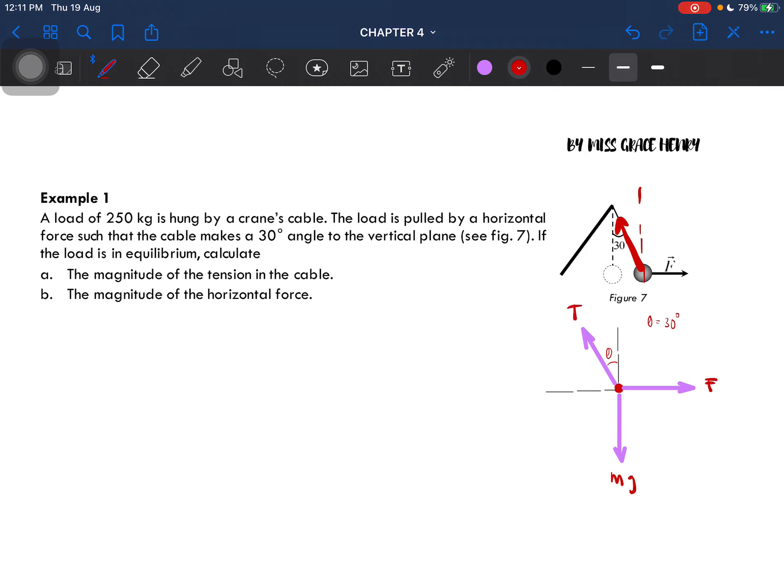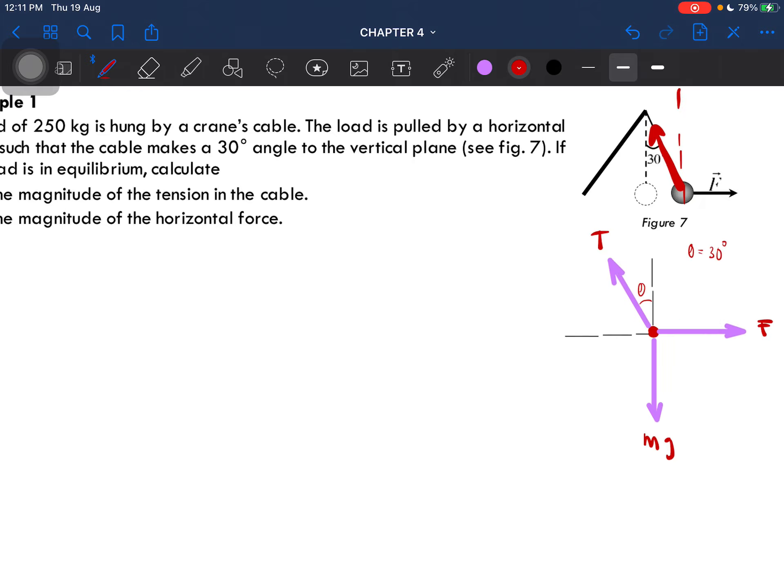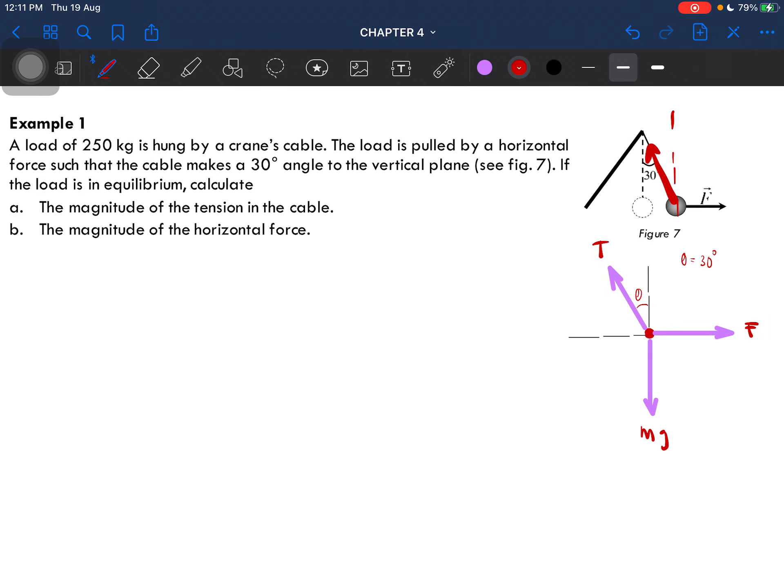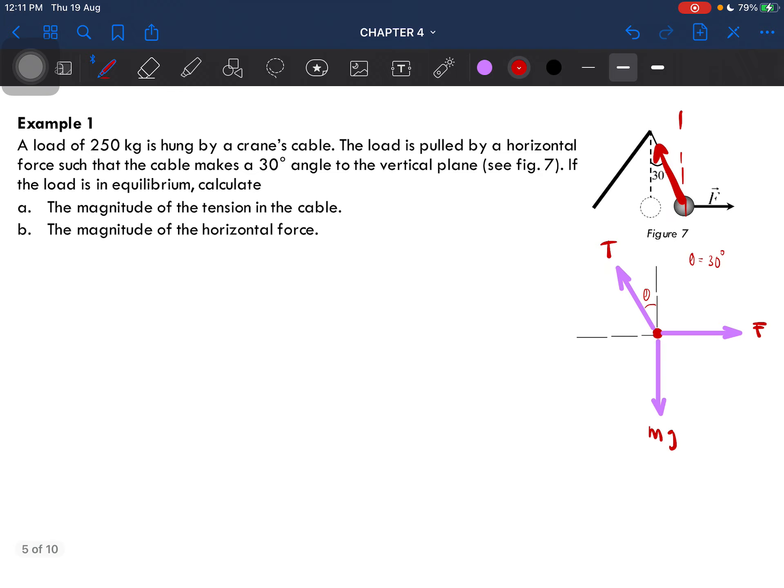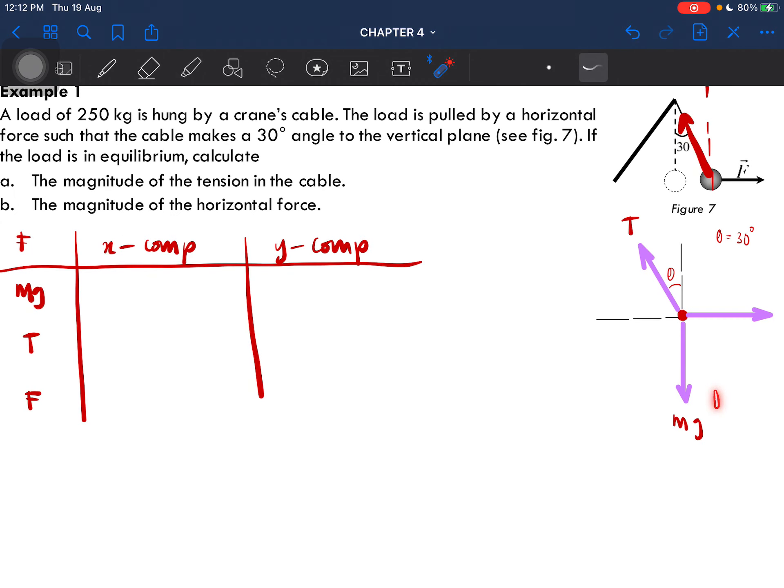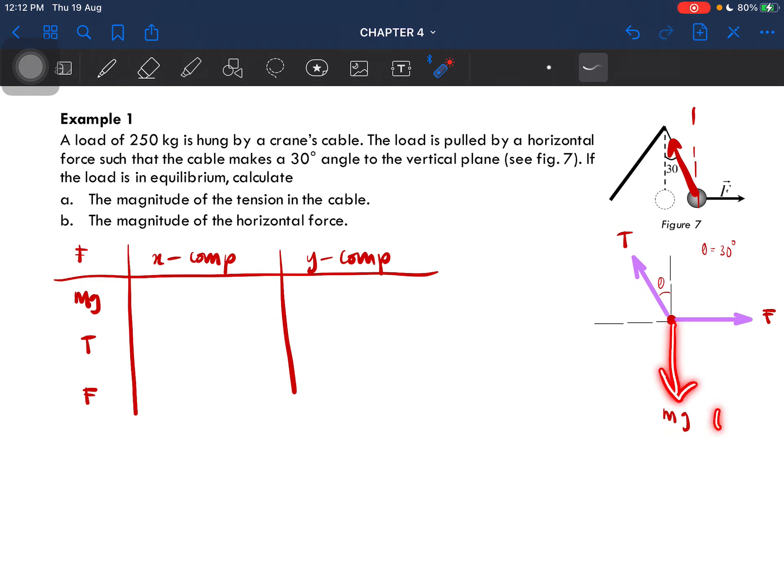Now, how do we do this? It's up to you if you want to do a table or not, but I'll show you a way using a table. We have the force which is mg, tension, and the external force. This is the x component and this is the y component. For mg, the x component is zero because there's only a y component which is negative mg. It's negative because it is pointing down.